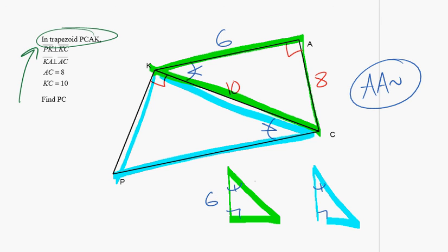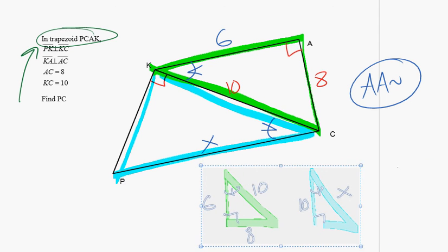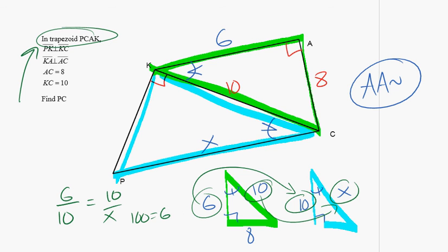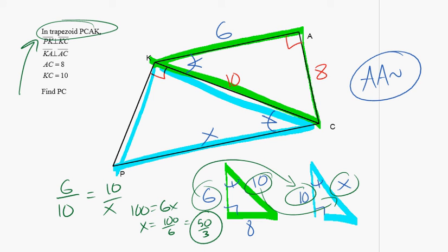This would be 6, this would be 10, this would be 8, this would be 10. I'm looking for PC, which is X, so I'll call that here. Separate proportion, 6 is to 10, as 10 is to X. 100 equals 6X, X equals 100 sixths, or 50 thirds.